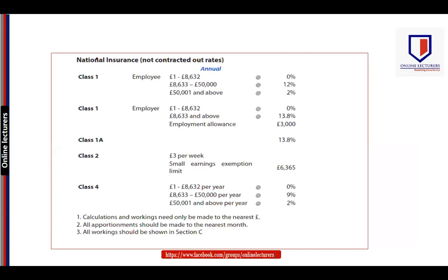These rates will be provided to you on the tax sheet in the exam. As far as Class 1 employee is concerned: up to £8,632 there is no NIC payable — that is 0%. If earnings exceed £8,632 and up to £50,000, the rate is 12% per annum. If earnings are in excess of £50,000, the rate is 2% with no upper limit.